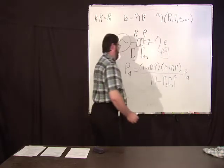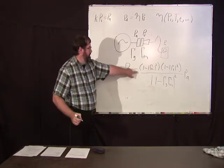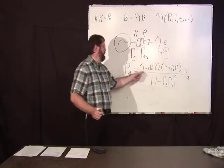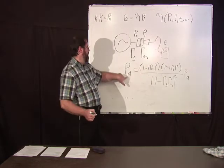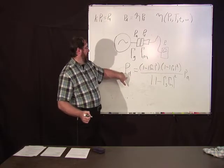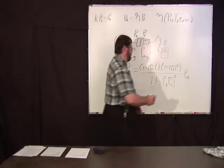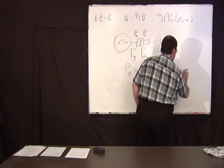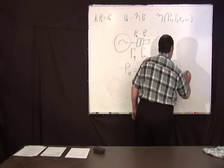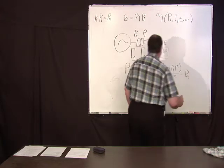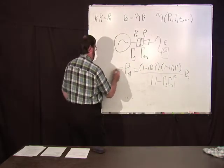I'm not going to derive this, I'm just going to state it. It takes a little work to derive. So this mismatch factor here in front of the available power tells you how much power is delivered. Of course, you can put the eta pi in. And then this is equal to eta pi.